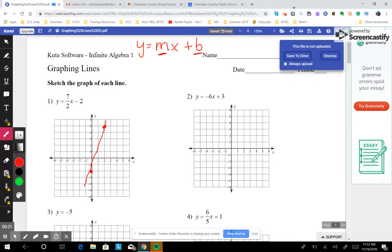Let's do this one. Your starting point is plus 3, 1, 2, 3. From there, you rise 6, negative 6, run 1.